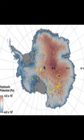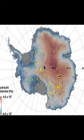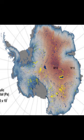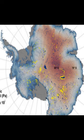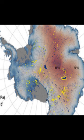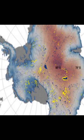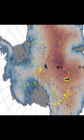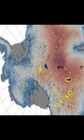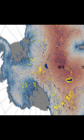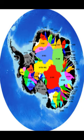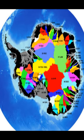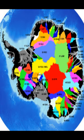The Antarctic Bedmap 2 dataset provides information on the subglacial hydraulic potential and the area, depth, and volume of hydraulic potential sinks. It also models patterns of subglacial melt and calculates water fluxes from the continent. The total flux from the continent is estimated to be 21 cubic kilometers per year. The highest basin flux is found in Bird Glacier, which has a rate of 2.7 cubic kilometers per year.